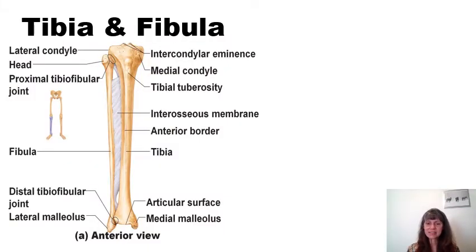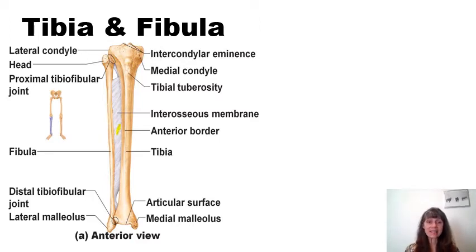This takes us to the tibia and fibula, the bones of the leg. Remember, the femur, which is the largest and heaviest bone in your body, is your thigh bone. The tibia and the fibula are your leg bones. The tibia and fibula, similarly to the radius and the ulna of the forearm, are also held together by means of an interosseous membrane.